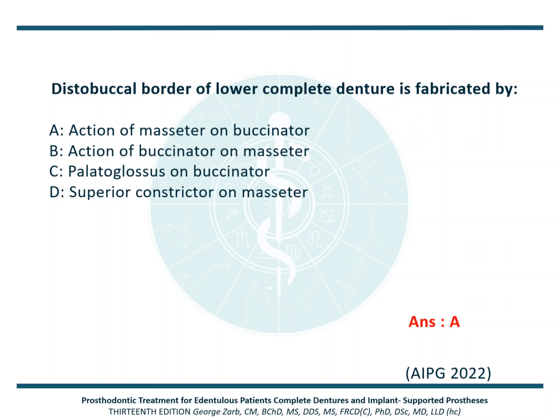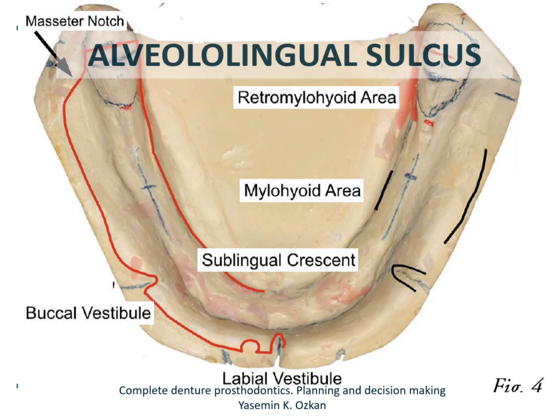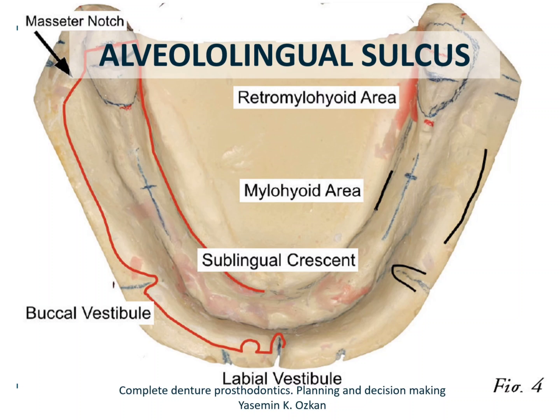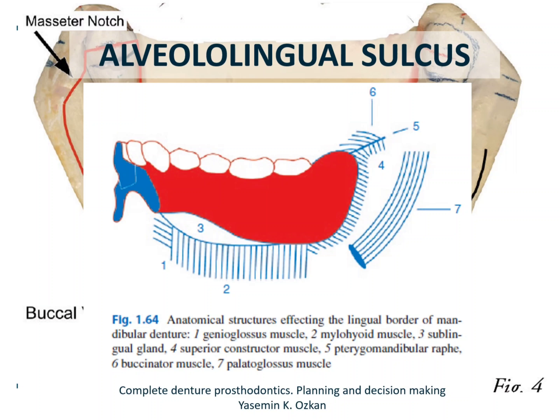Now we will talk about the alveolingual sulcus. It can be examined when divided into three areas: the anterior vestibule or sublingual crescent area, the middle vestibule or mylohyoid area, and the distolingual vestibule or lateral throat form or retromylohyoid fossa. The anatomical structures that affect the lingual borders include the genioglossus muscle, the mylohyoid muscle, the sublingual gland, the superior constrictor muscle, the pterygomandibular raphe, the buccinator muscle, and the palatoglossus muscle.